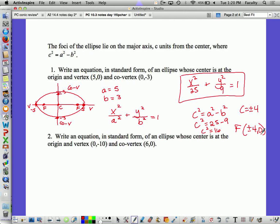All right, let's try another one. In example 2, it says write an equation in standard form of an ellipse whose center is at the origin. The vertex is 0, negative 10, and a co-vertex at 6, 0. So again, this is just a rough sketch to get an idea of what's going on. So let's call this negative 10. That's a vertex. It has a partner up here at positive 10. I have a co-vertex at 6, and then that means that negative 6 is another co-vertex. So this is an ellipse.